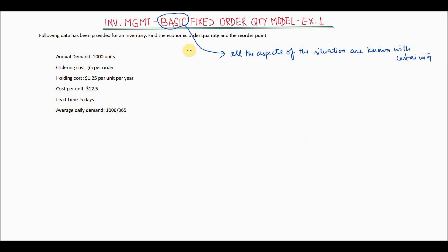So that is what we are going to look at in this example. The following data has been provided for an inventory — find the economic order quantity and the reorder point. As an inventory manager, these are your two main decision points: how much to order and when to order.